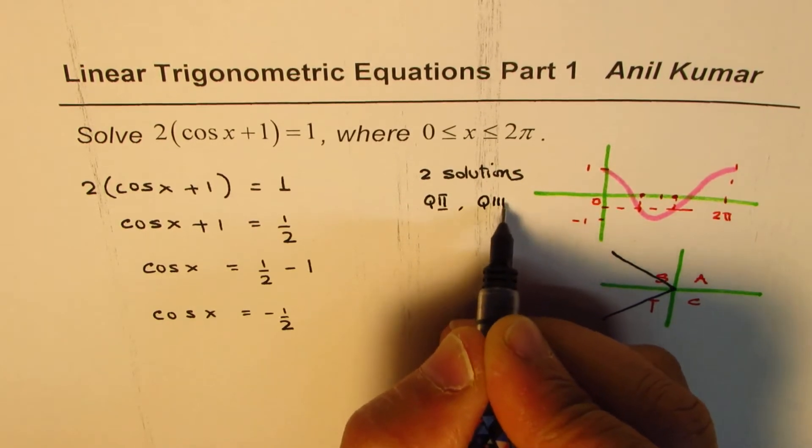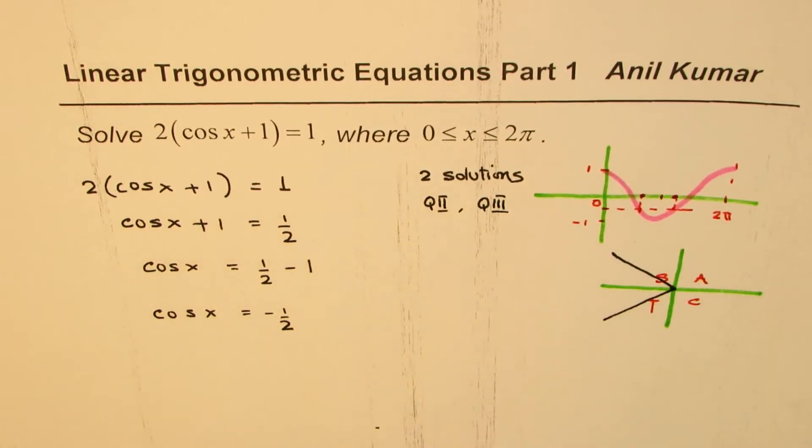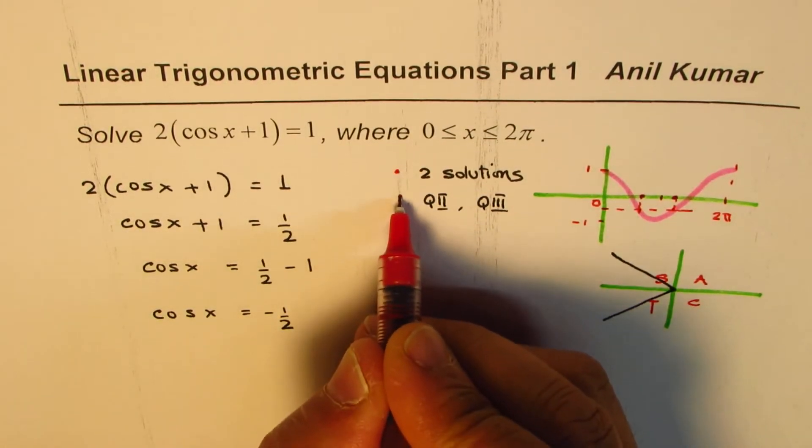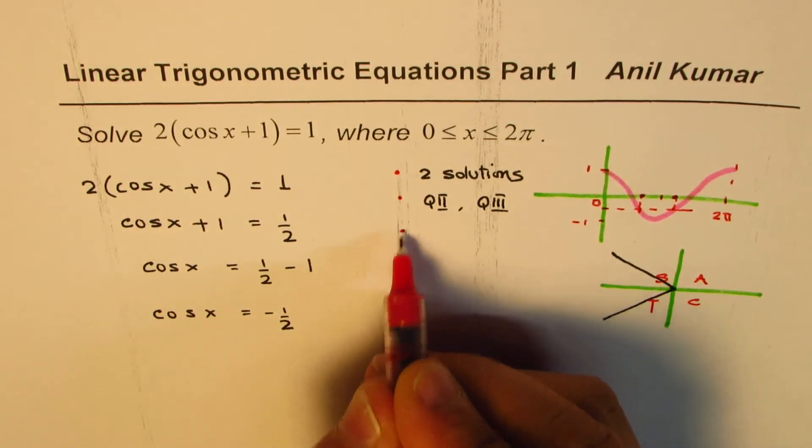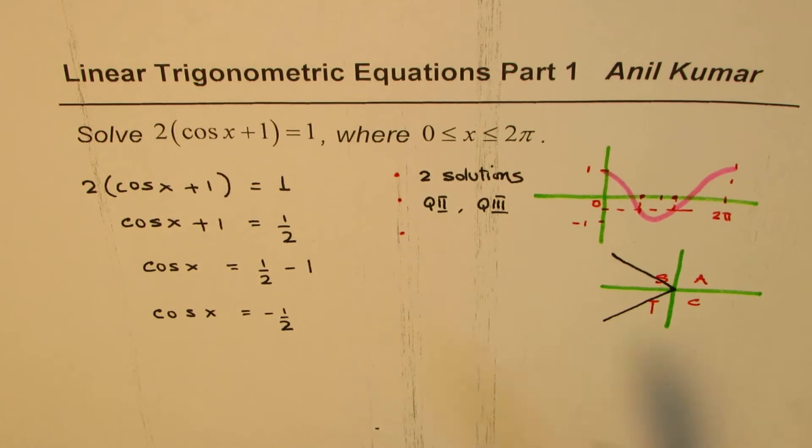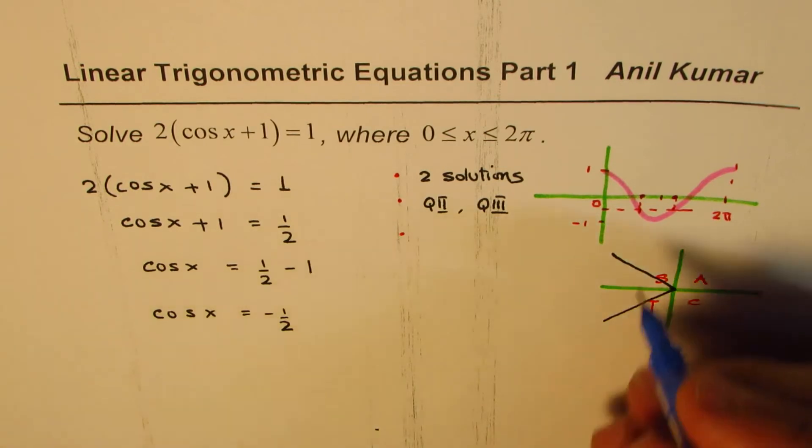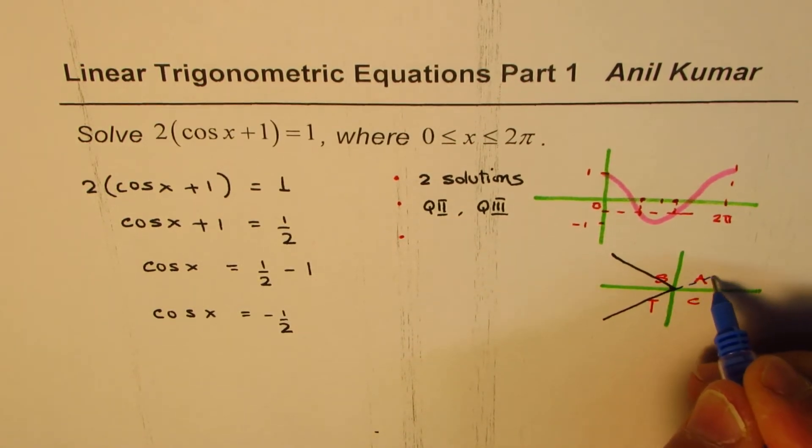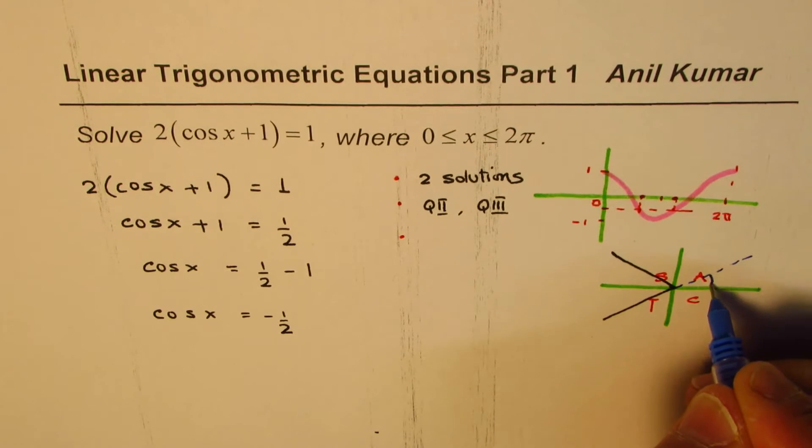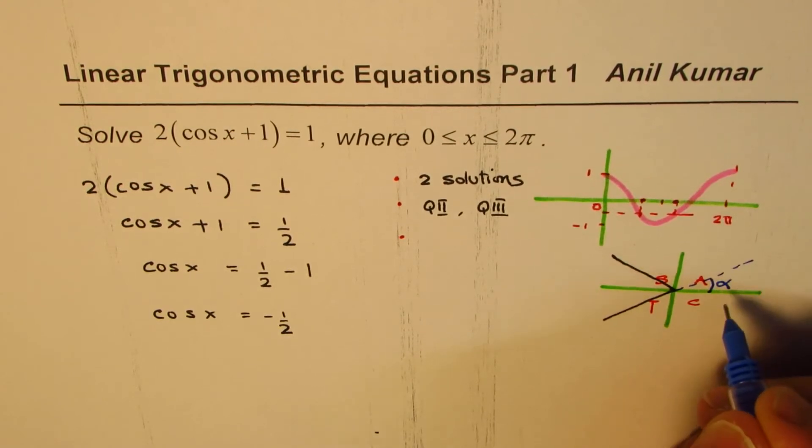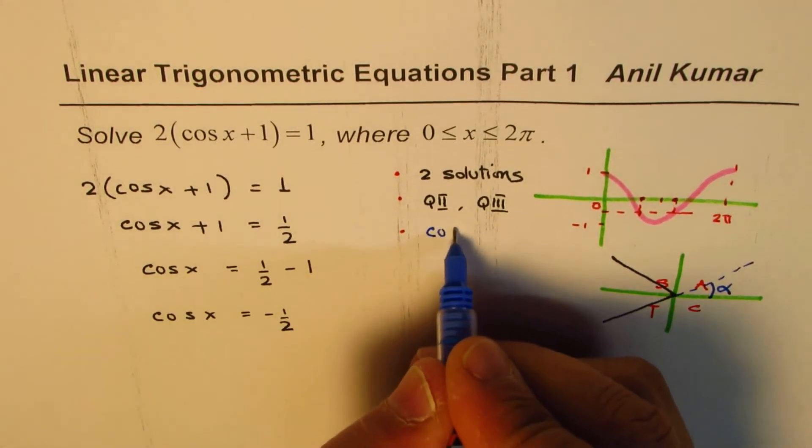Now how to find these solutions? To find these solutions, we find the related acute angle. So we try to find the related acute angle which is right there, this angle α. We solve for cos α = 1/2.